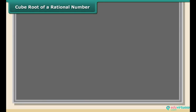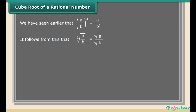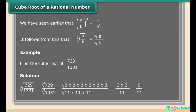Cube root of a rational number. We have seen that (a/b)³ = a³/b³. It follows that ∛(a/b) = ∛a / ∛b. Example: Find the cube root of 729/1331. Solution: ∛(729/1331) = ∛729 / ∛1331 = ∛(3 × 3 × 3 × 3 × 3 × 3) / ∛(11 × 11 × 11) = (3 × 3) / 11 = 9/11.